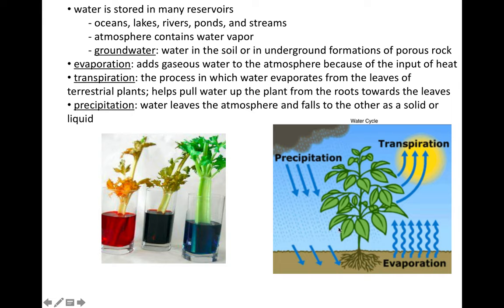These leaves need water — they get it from their roots. How do they defy gravity and pull water up? Through transpiration. As water evaporates from the leaves, it pulls on the water molecules below it, pulling them up the stalk and towards the leaves. You may have done an experiment as a kid where you put celery into food coloring — eventually those leaves became the color of the food coloring because it evaporates from the leaves, pulling the water and food coloring up the stalk.